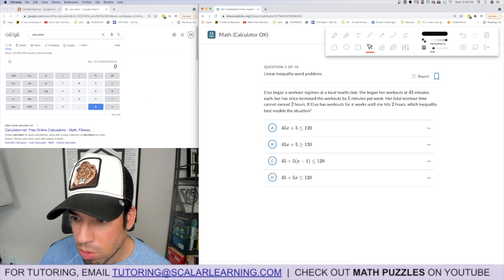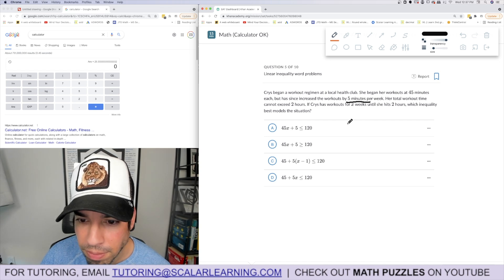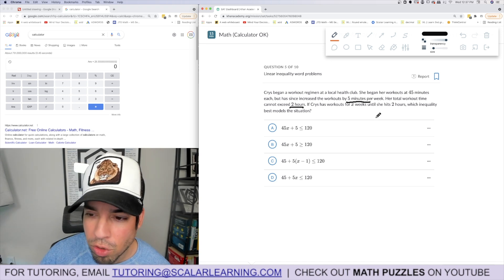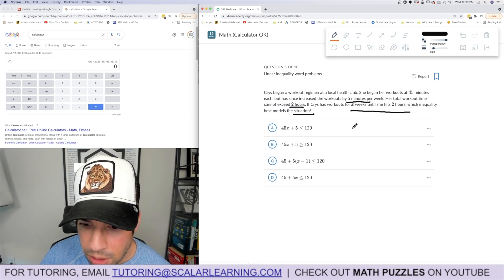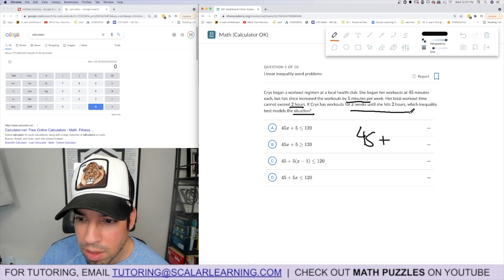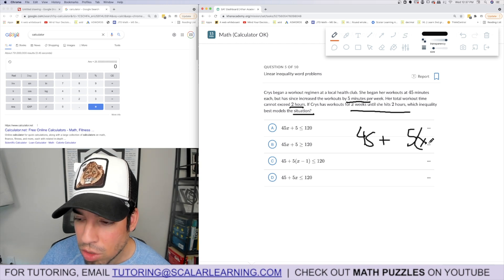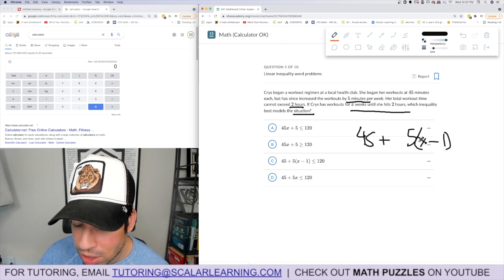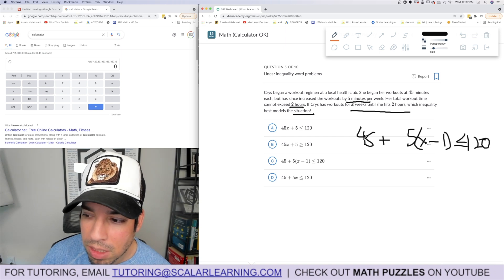Chris began a workout regimen at a local health club. She began her workouts at 45 minutes each but has increased the workouts by 5 minutes per week. Her total workout time cannot exceed 2 hours, that is 120 minutes. Which inequality best models the situation? It'd be 45 plus 5 times (x minus 1), because when x equals 1 it's just 45, that accounts for that. When x equals 2, I'm adding 5 minutes. It's got to be C, less than 120 minutes.